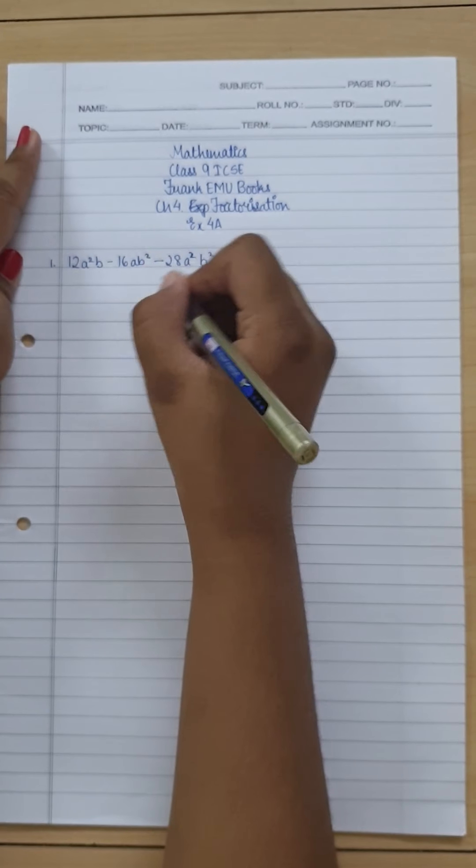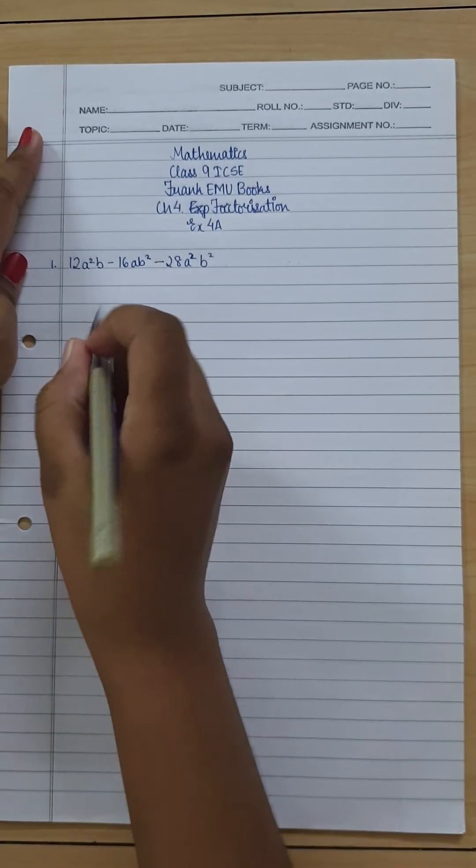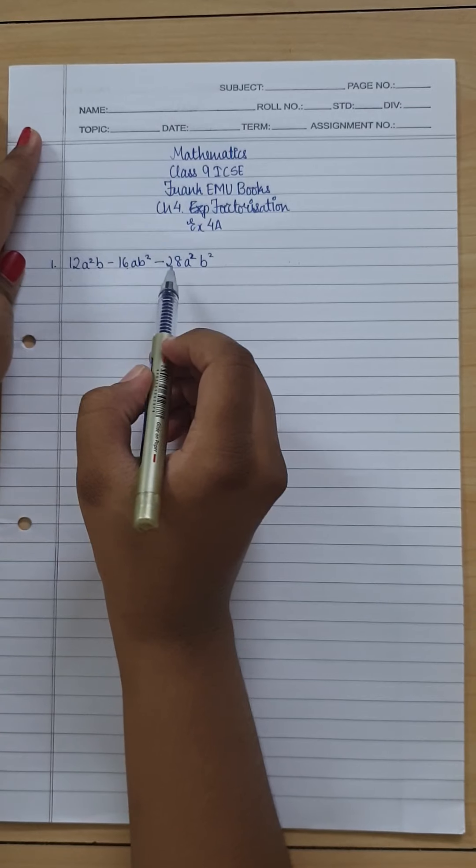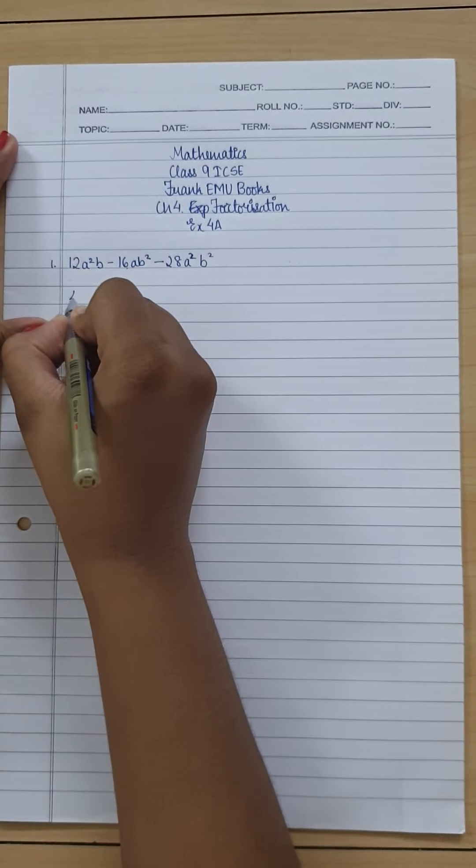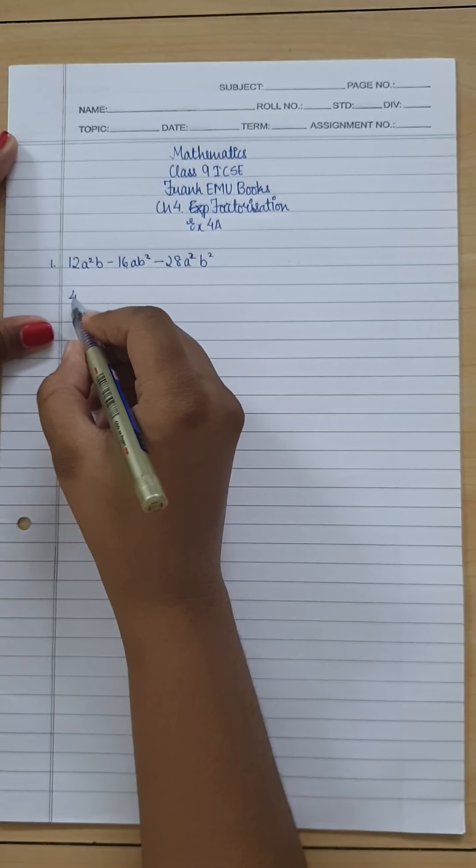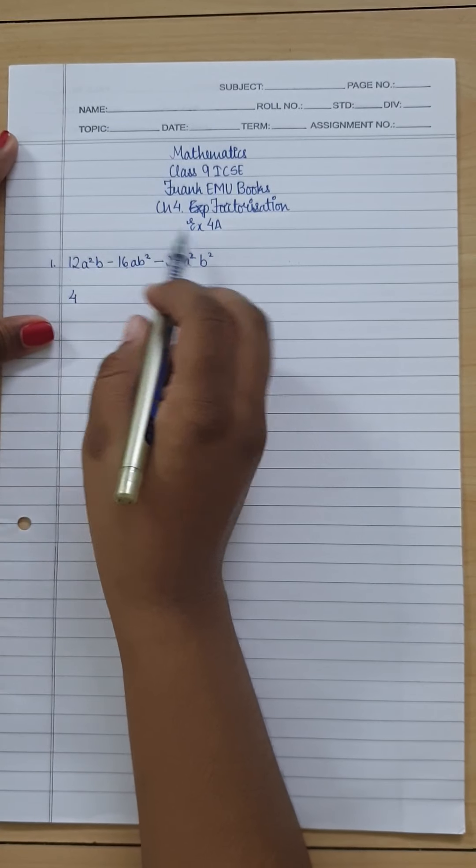So I can just take this over here, that is 4. And one thing that is common in all the numbers is a and b occurring at least once. So what I can do is 4ab.